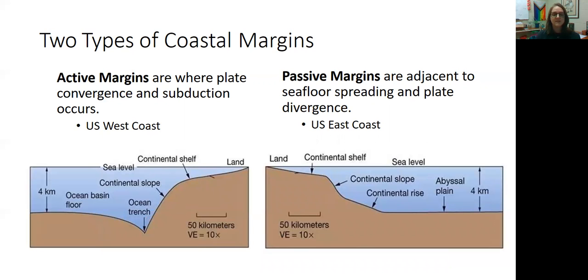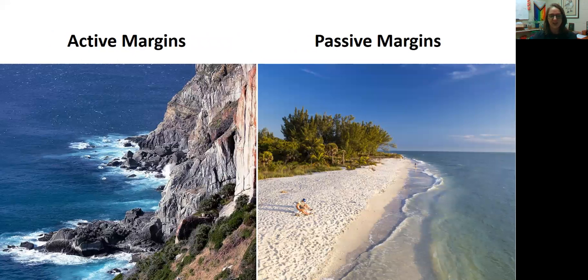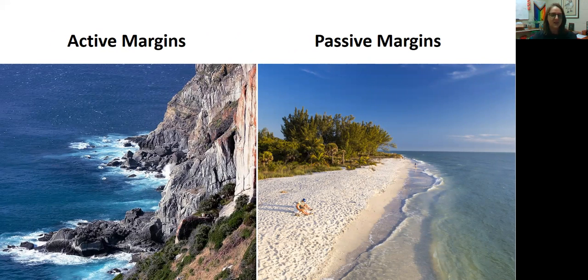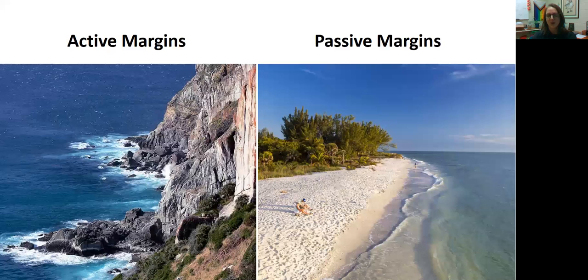Now, these different margins vary in shape. The active margins, they're steeper, they're often rockier because there's active subduction, active mountain building, whereas passive margins tend to be flatter, not associated with very many mountains. So when you think of active margin, think like the coast of California, cliffy, rocky. Passive margin, think about flat, sandy, far away from any active tectonics.